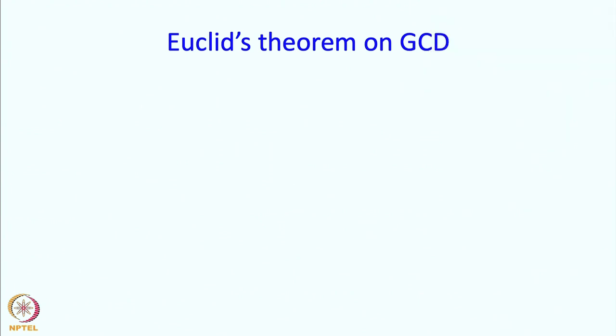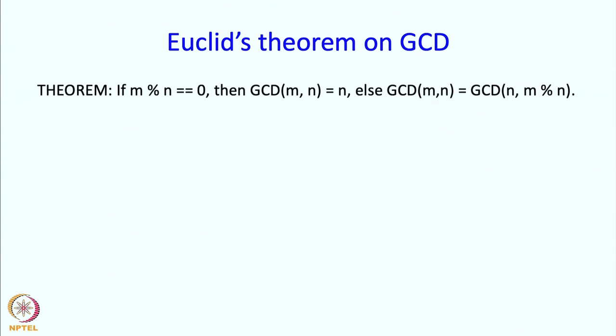Let me remind you of Euclid's theorem on GCD. The theorem says: if M mod N is equal to 0, then GCD of M and N is N; else the GCD of M and N is the GCD of N and M mod N. If you look at this theorem, it almost looks like a program — it looks like an if-then-else statement and nothing more.